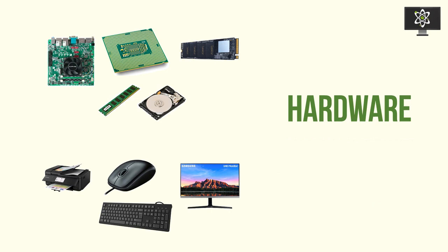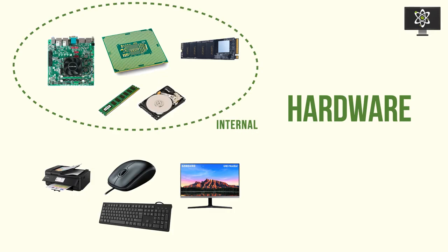Hardware is best understood as two different types. Firstly, you've got internal hardware — components which are critical for the operation of computer systems. They're typically cased inside a computer system, which is why they're called internal. Think of a human body: internal hardware is like your organs, your heart — things you need in order to live.